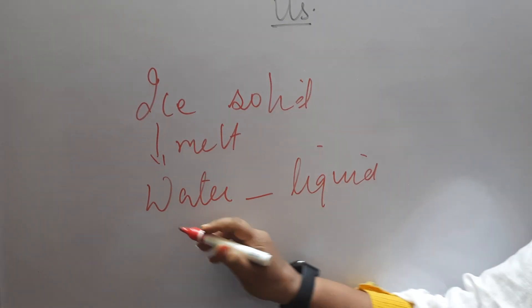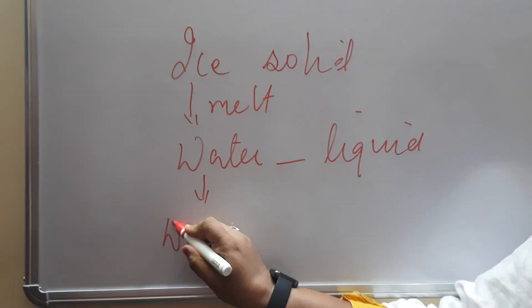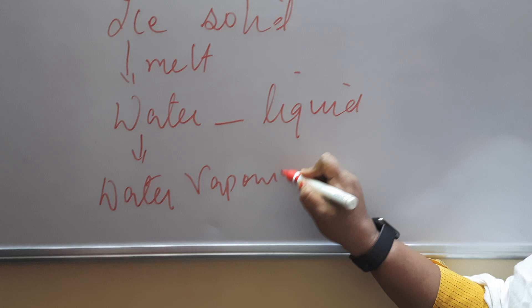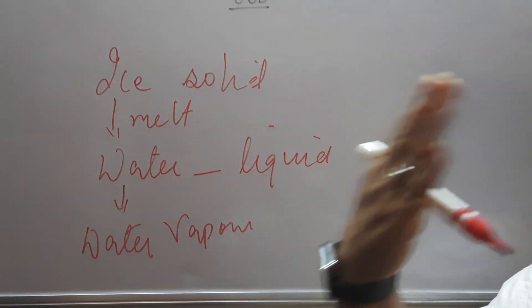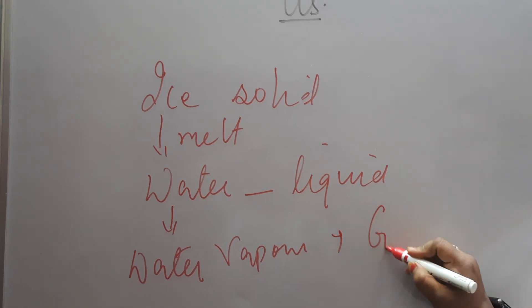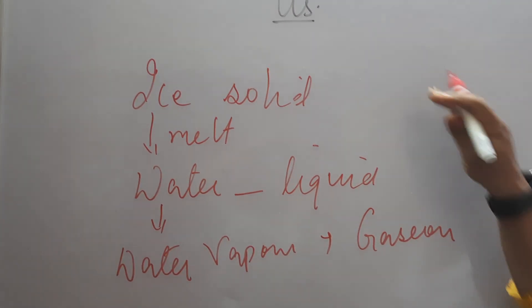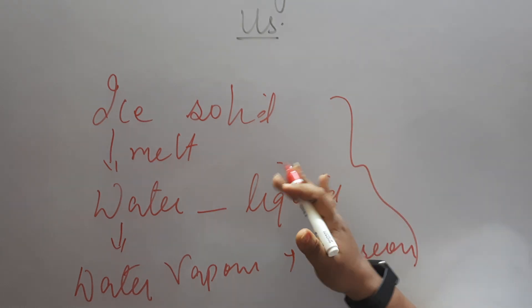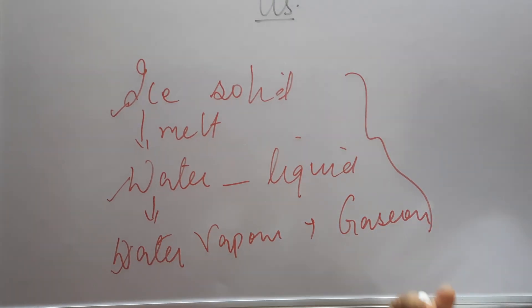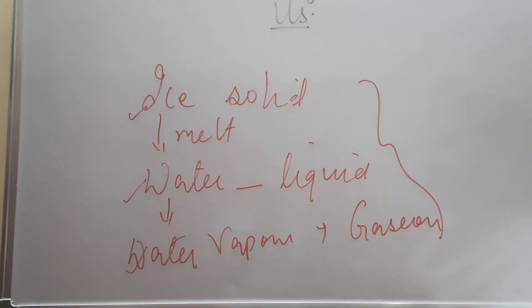Change and then from water, it becomes water vapor. Thodi dher baad tum dekh hoge, quantity of paani ka kam hota ja raha hai. Jo environment ka temperature hai, usse water vapor may change ho raha hai. That is gaseous state. So ye different state tumko change hua paani ka. One is solid, one is liquid and one is vapor. That is gaseous state.